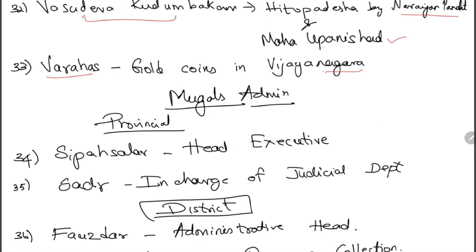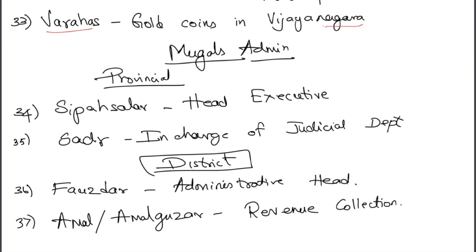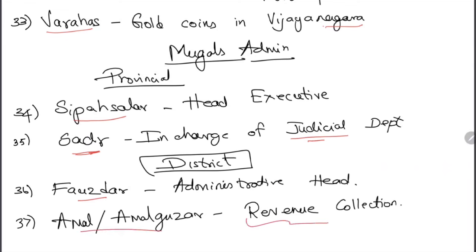In Mughal provincial administration: Sipasalar was the head executive; Sadr was in charge of judicial departments — this word 'Sadr' always relates to judiciary. At the district level, Faujdar was the administrative head and Amal or Amalguzar were revenue-collecting officers — the word 'Amal' always relates to revenue.